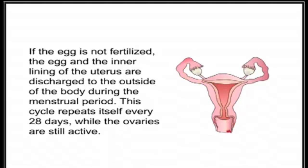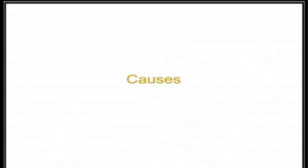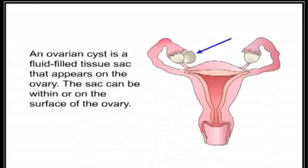If the egg is not fertilized, the egg and the inner lining of the uterus are discharged to the outside of the body during the menstrual period. This cycle repeats itself every 28 days while the ovaries are still active. The uterus is pear-shaped, about three inches long, and has three layers. The inner layer of the uterus is called the endometrium. An ovarian cyst is a fluid-filled tissue sac that appears on the ovary; the sac can be within or on the surface of the ovary.